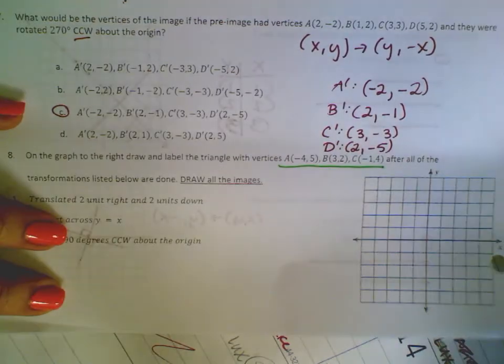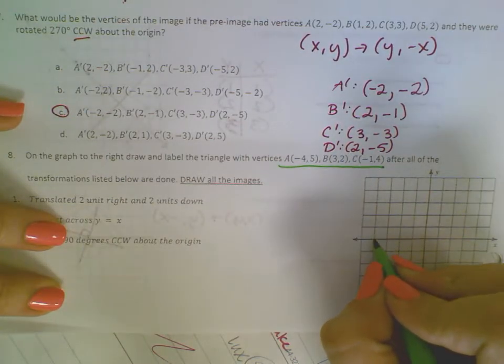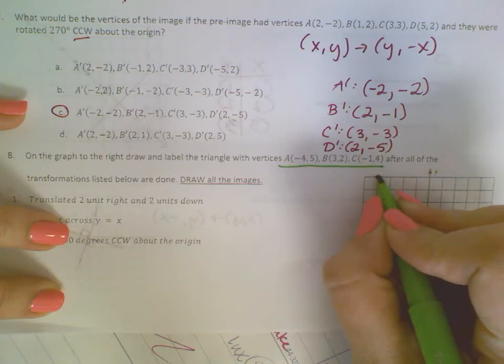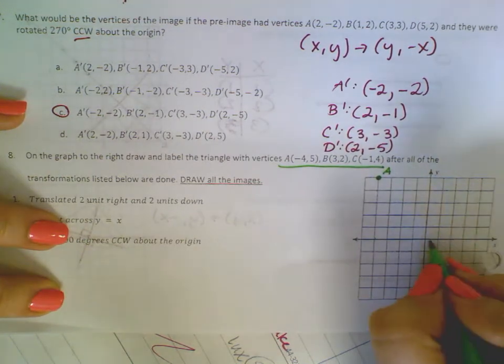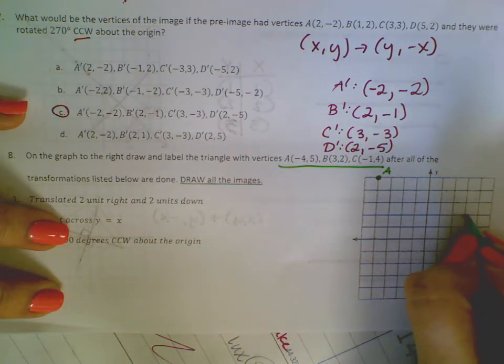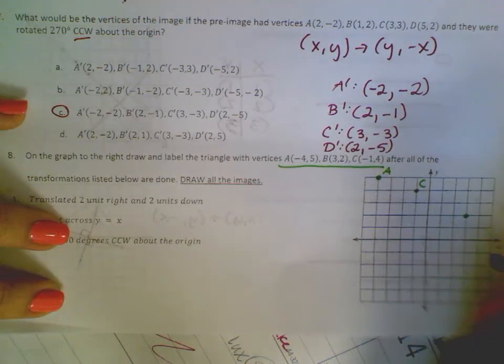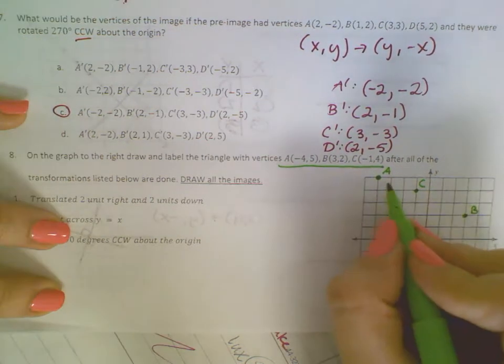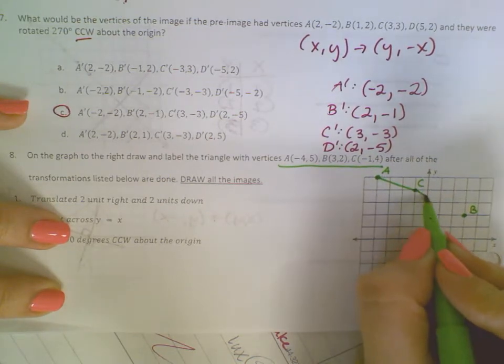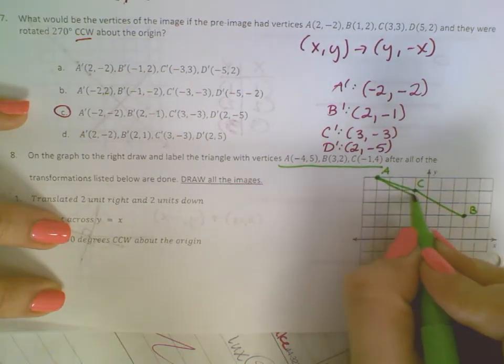So A, I'm just going to plot at negative 4, 5. Negative 4, 5 is A. B is at 3, 2. And C is at negative 1, 4. So this is a very skinny triangle.